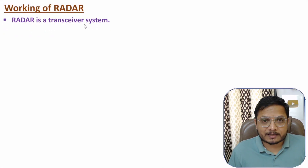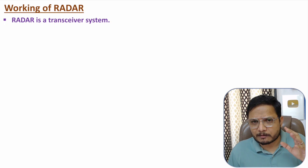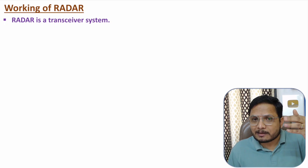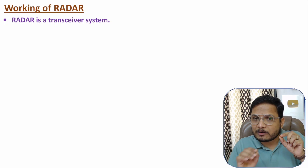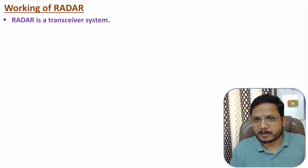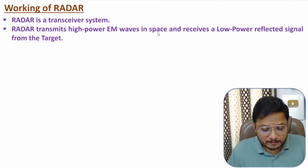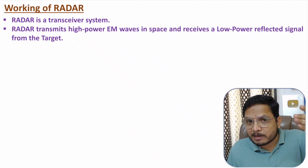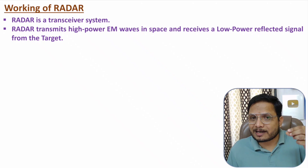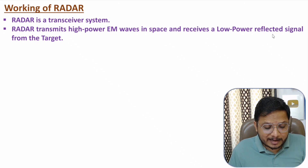Radar is a transceiver system — it has both a transmitter and a receiver. The transmitter is used to transmit a high-power signal that propagates into space. Whatever object is there in space will reflect the signal back, and that reflected signal will come back to the same radar system. The transmitted signal has very high power, and once it reaches the target there is reflection. That reflected signal comes back to the radar very weak — the receiver of radar should therefore be very sensitive.